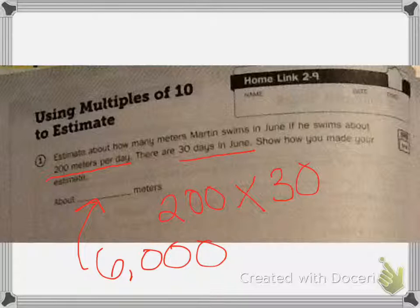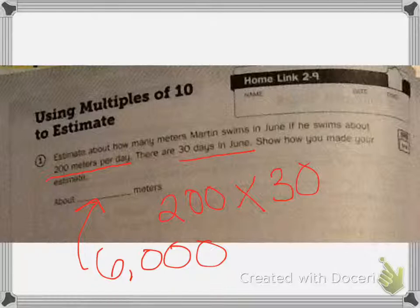Number two says: estimate how many days it would take Martin to swim 60,000 meters. Show how you made your estimate. This is where you might use division. You might create a box, maybe some repeated addition to figure out how many. All up to you.